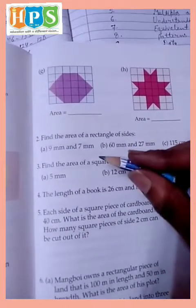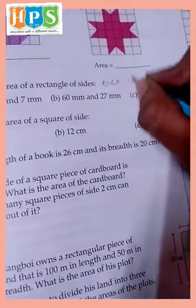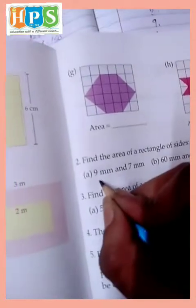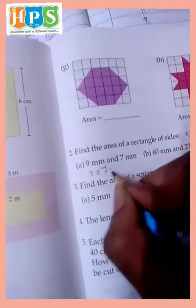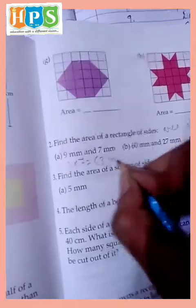Find the area of rectangle side. Area of rectangle side formula, area of rectangle is equal to L into B. It means length into breadth, length into breadth, 9 multiply 7, 9, 7, then 63 millimeter.